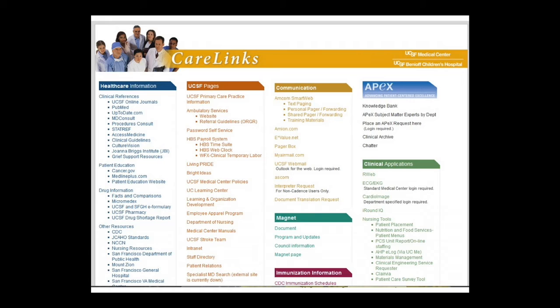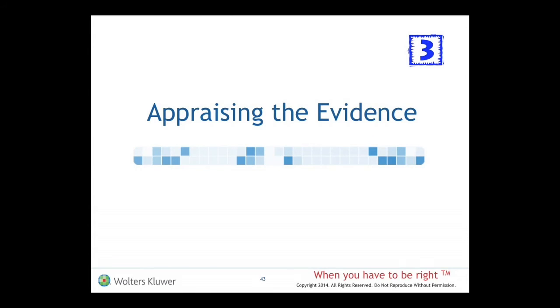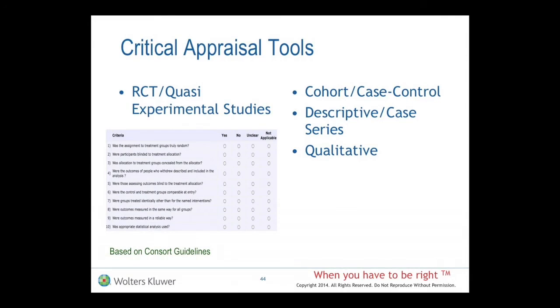We know that people are using it — I've got a slide coming up to show you that. Appraising the evidence is the third step of the five steps to evidence-based practice. JBI has training worldwide to teach users how to become facile with comprehensive systematic reviews and to use their software and tools. One of the tools built into their software are critical appraisal tools.